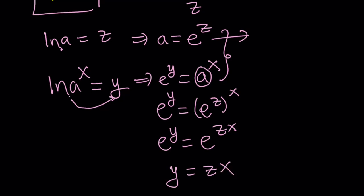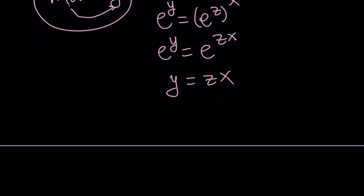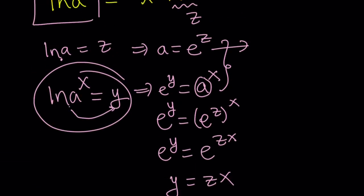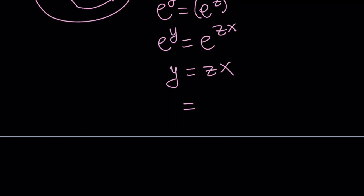But we were looking for y, this expression right here. So, now we got the answer, but what is z, what is x? z is ln a, so we can write this as ln a times x or x times ln a.